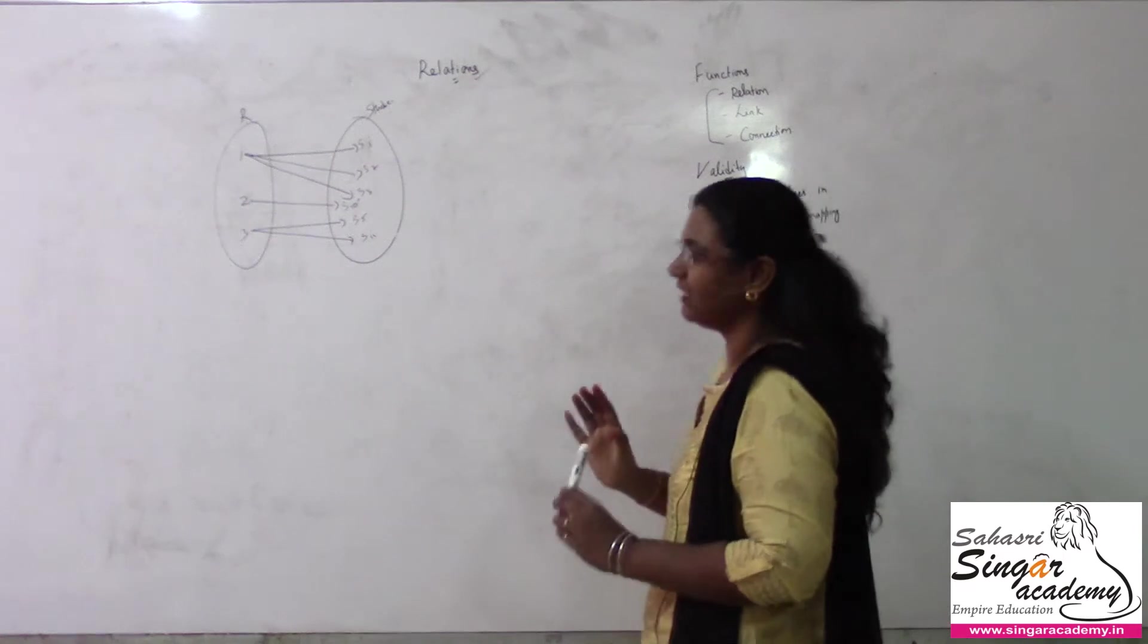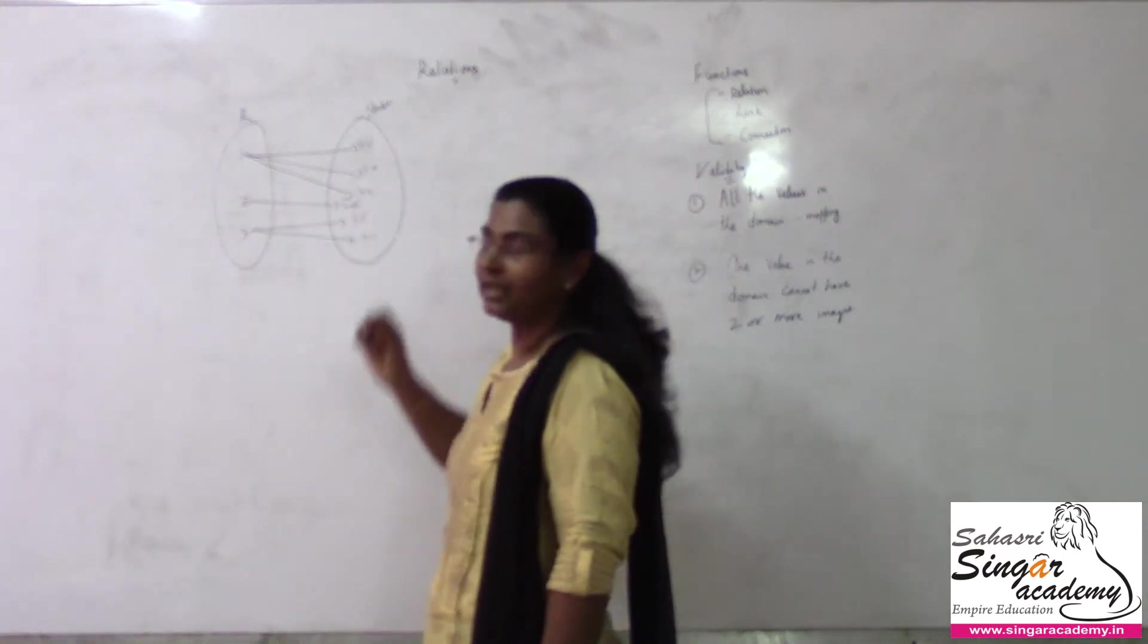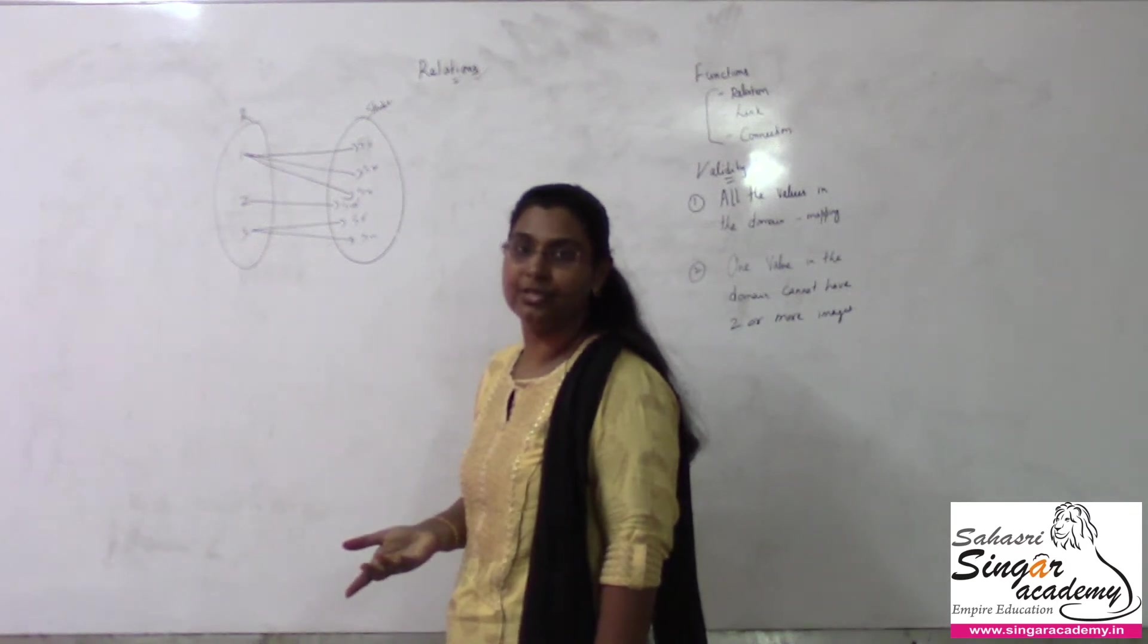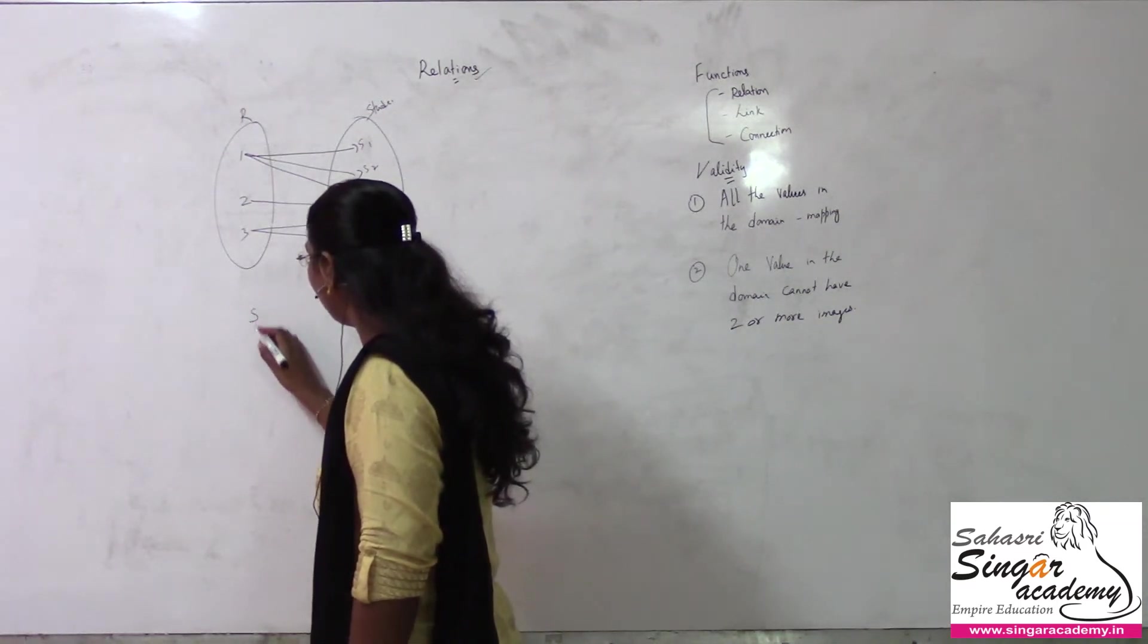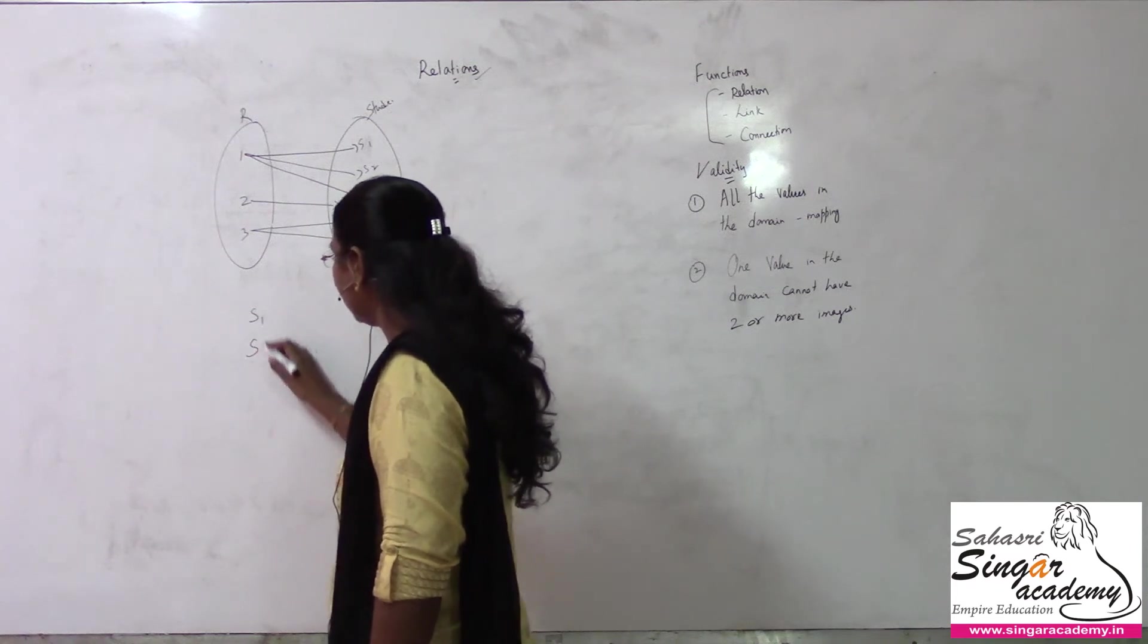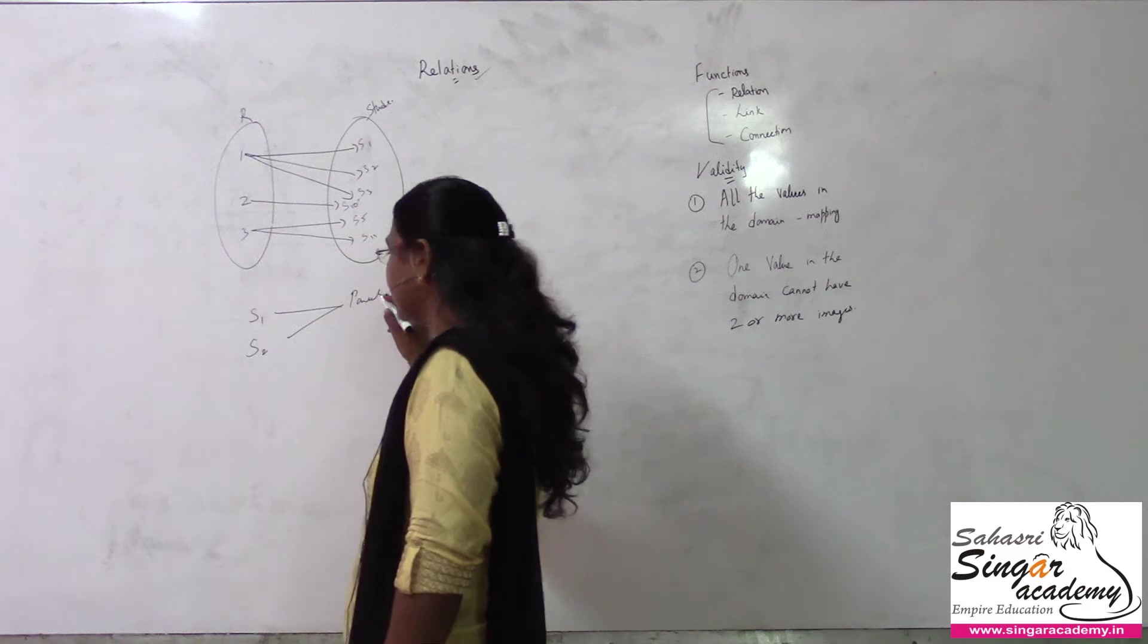But in relation, it is nothing but a link, some connection being brought. One rank for three students - yes, you can give it, no issues. For one parent, there are two or more sisters - sister one, sister two, same parents. We're not talking about cousins.